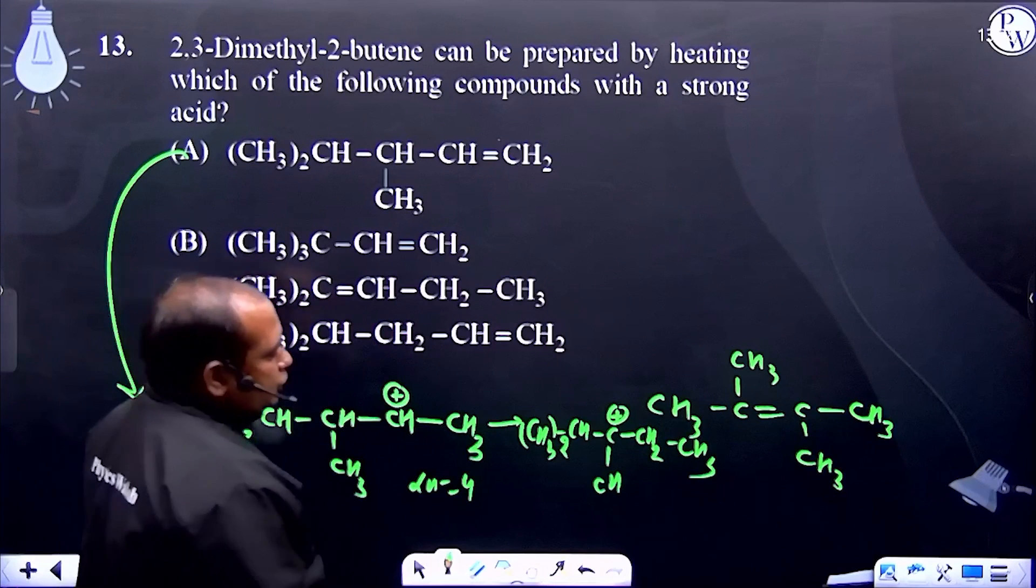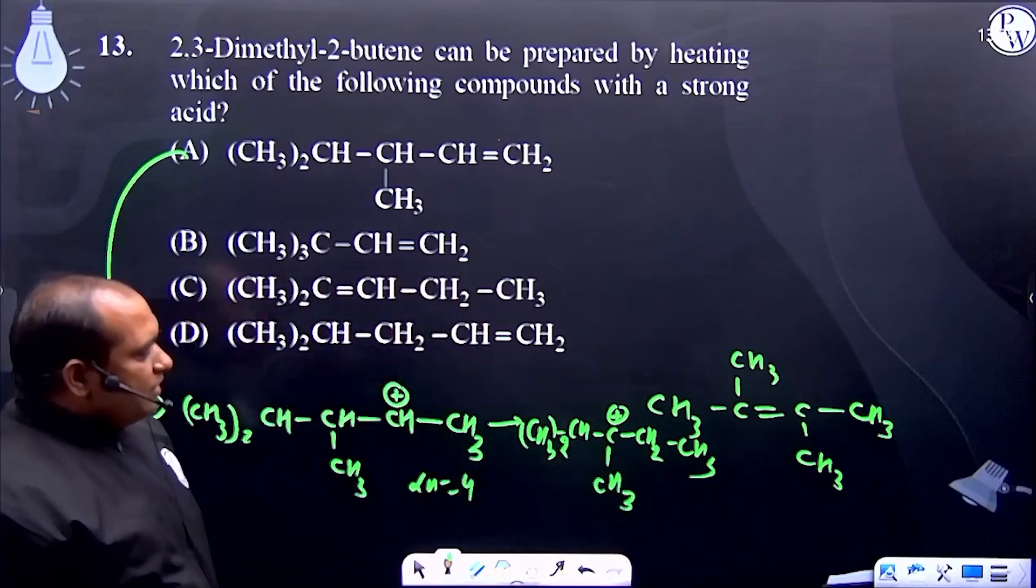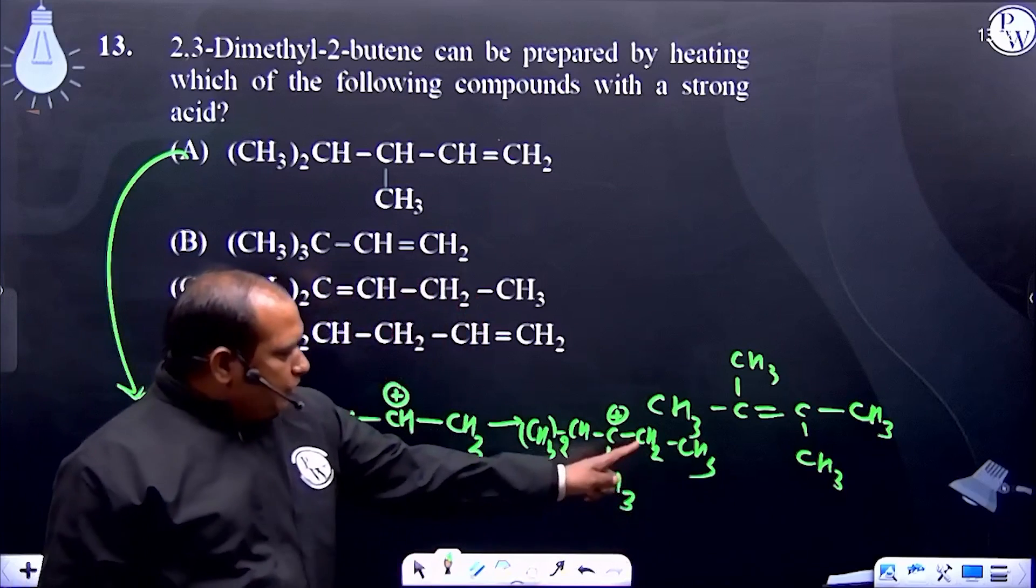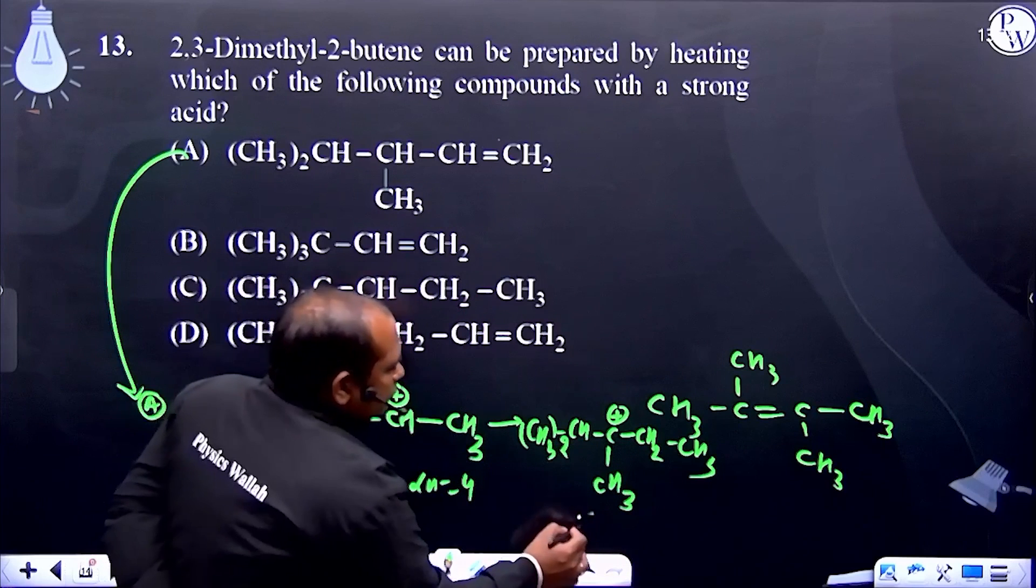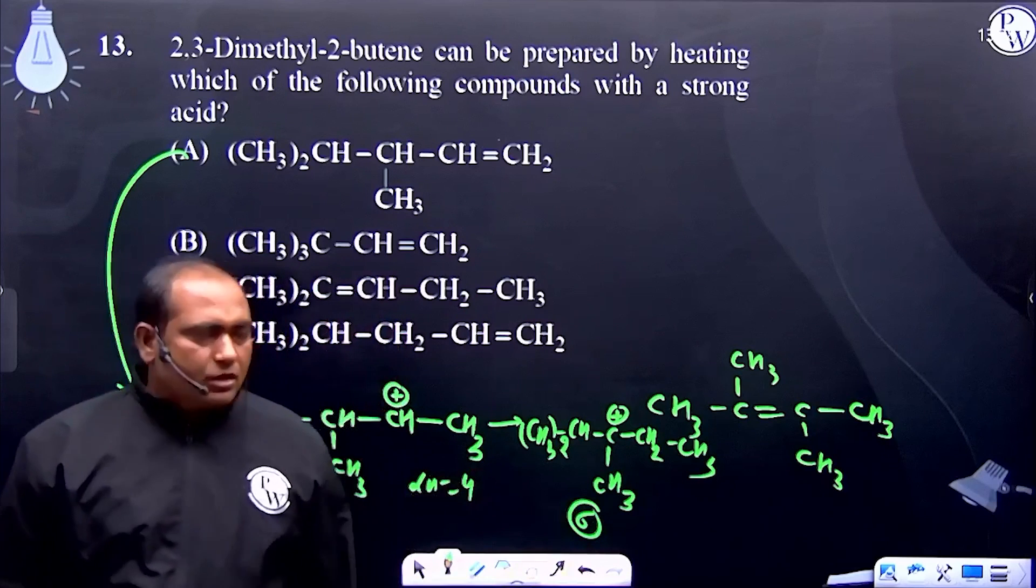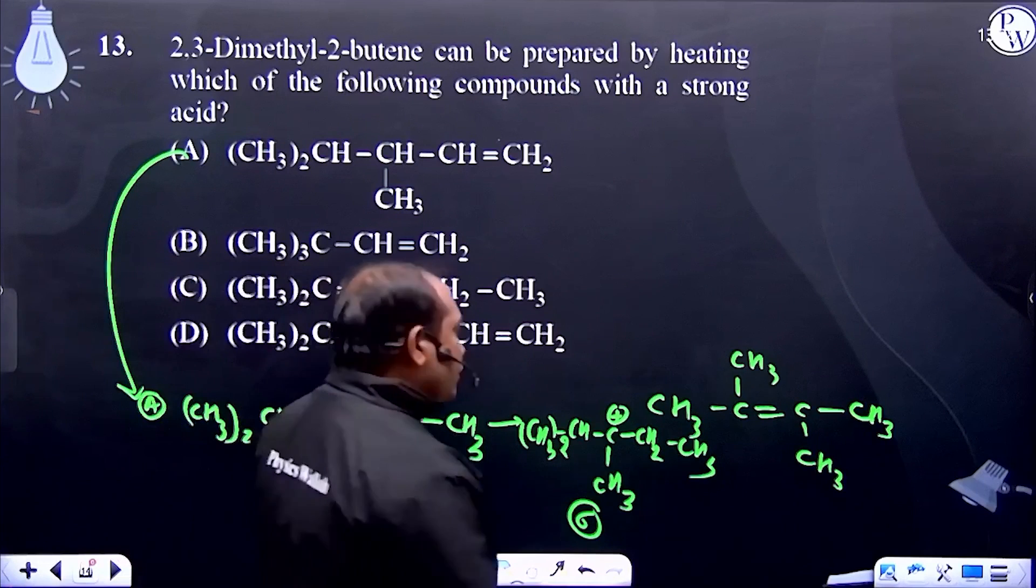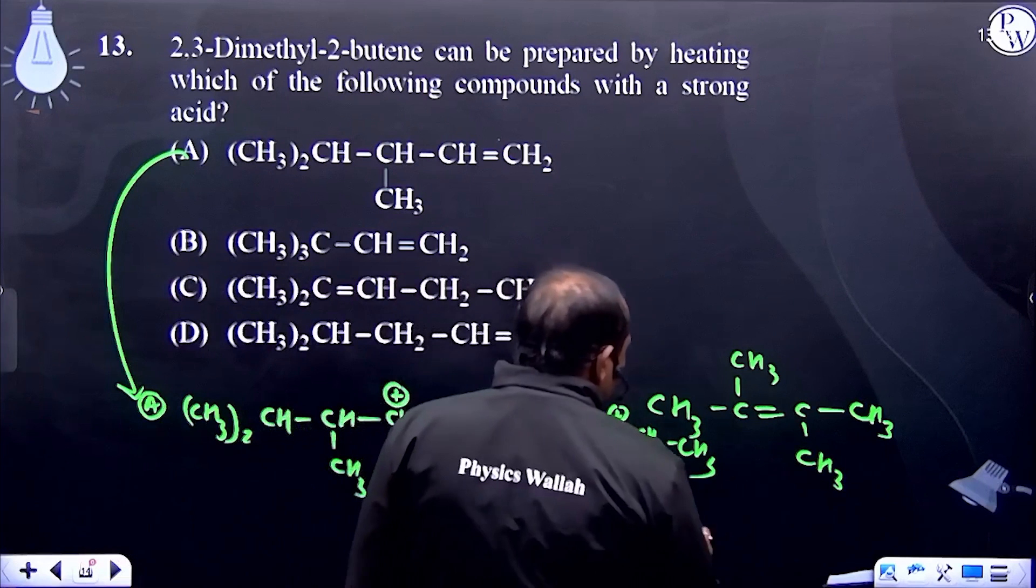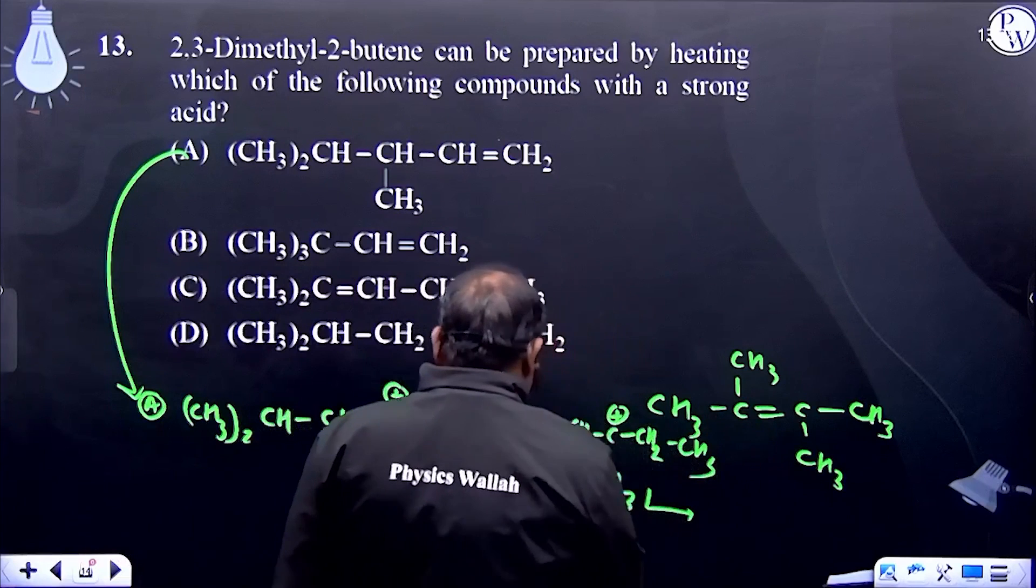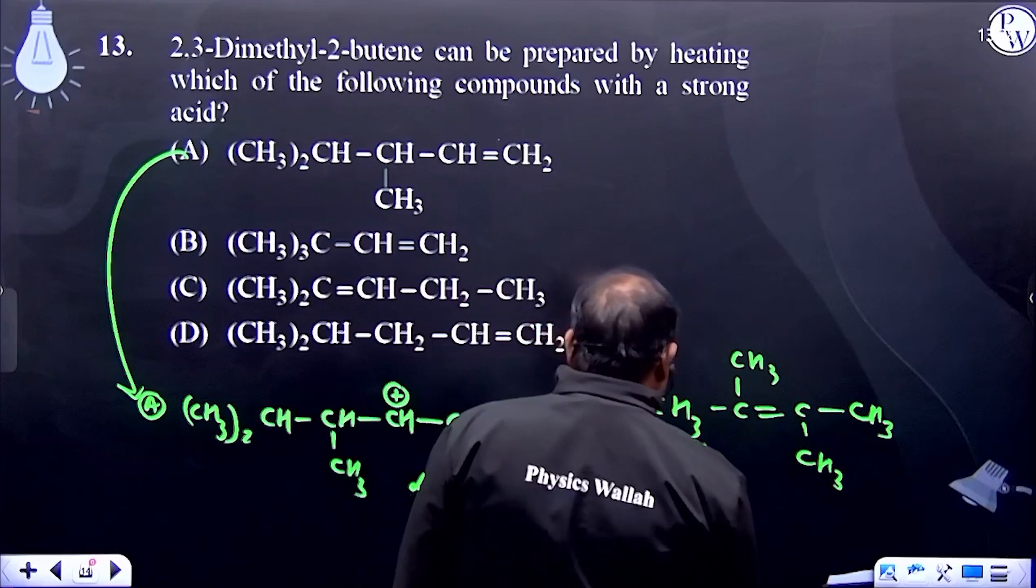Then elimination takes place. How many alpha hydrogens? From four alpha hydrogens to six alpha hydrogens - journey from less stable to more stable carbocation. But after elimination, we don't get this type of product.